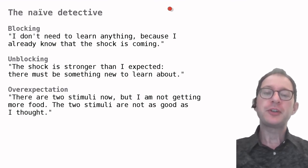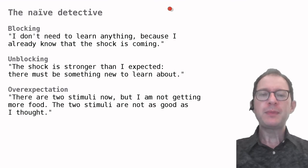In unblocking, however, there is something new, because the shock used in phase 2 is larger than the one in phase 1. So maybe the animals are learning about the light because they are looking for how to predict the larger shock. It's like they were thinking, the shock is stronger than I expected, there must be something going on to learn about.